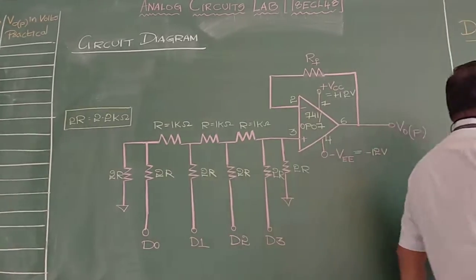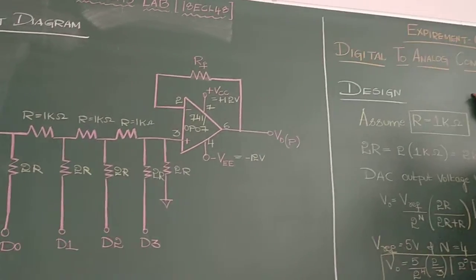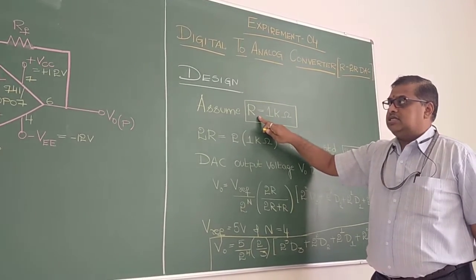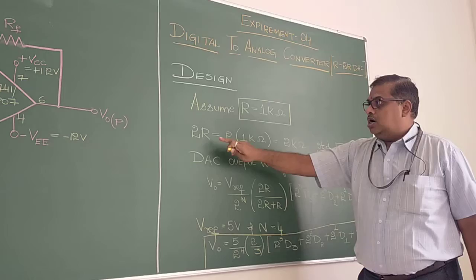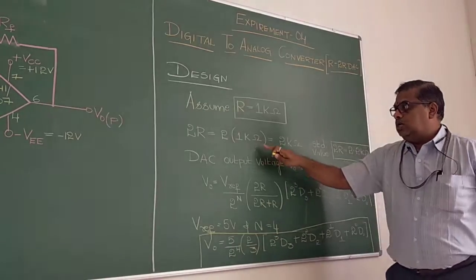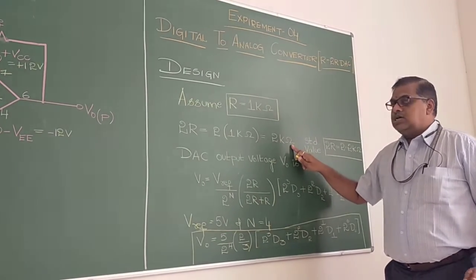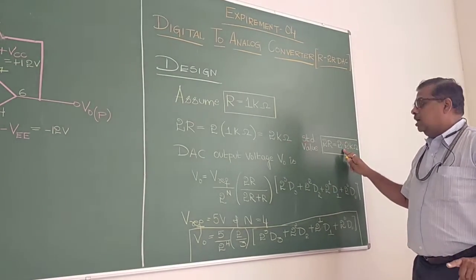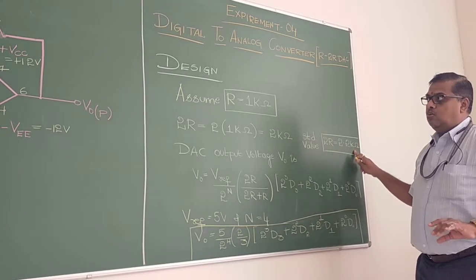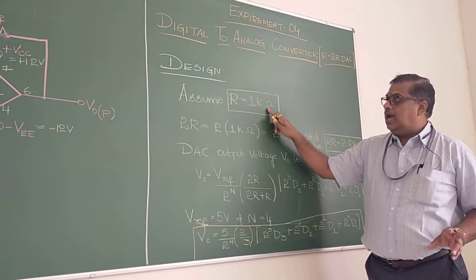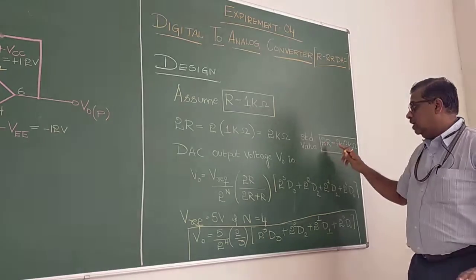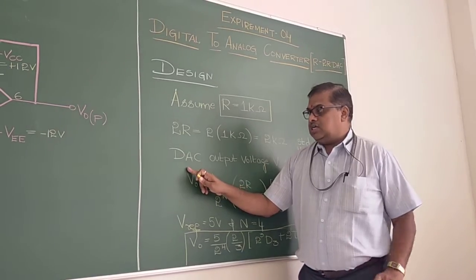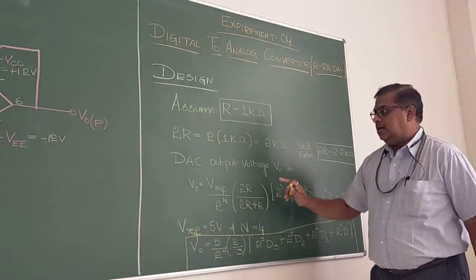Now I will be explaining the design of this one. In that circuit, I have assumed the resistance value, the series resistance value to be 1 kilo ohms. Therefore 2R will be 2 into 1 kilo ohms, it will be 2 kilo ohms. But since we do not have the standard 2 kilo ohms, we are taking that value to be 2.2 kilo ohms. 1 kilo ohm is available in the lab, whereas 2 kilo ohms is not available, therefore we are taking 2.2 kilo ohms.